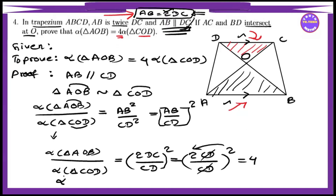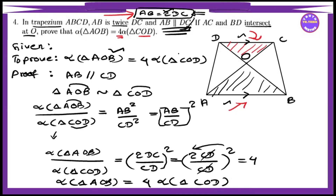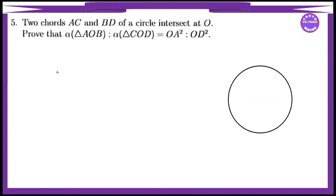CD by AOB equal to the area of triangle COD. Now let's say we can see triangle AOB and triangle COD. We can see that the area of triangle COD is equal to the area of triangle COD. So the number gives us AC and BD to cut — AC and BD of a circle intersect at O.